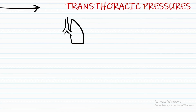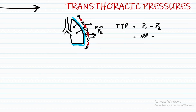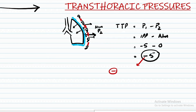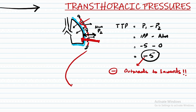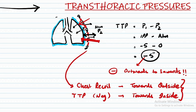At the trans-thoracic level, the chest wall is also a wall, so its transmural pressure is composed of inner intrapleural pressure P1 and outer atmospheric pressure. The trans-thoracic pressure is minus 5 minus 0, which is a negative value — meaning the net force moves from outside to inside. The elastic recoil of the chest wall tends to move it outward, while the trans-thoracic pressure tends to move it inward, and this balance is maintained between the two opposing forces.